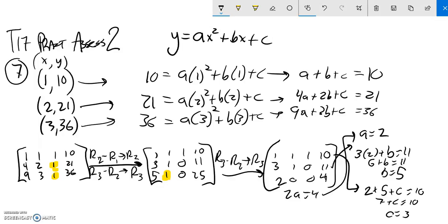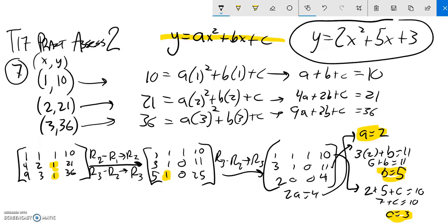So notice that I found a, b, and c. But I'm not done because what I'm looking for is this equation. So, the equation of the parabola that goes through these points must be y equals 2x squared plus 5x plus 3. There's my answer.